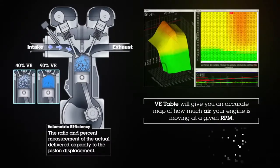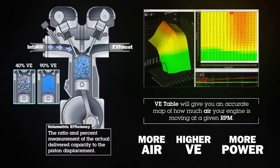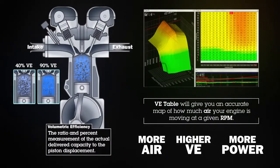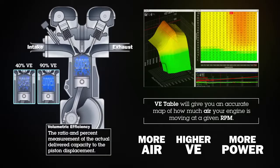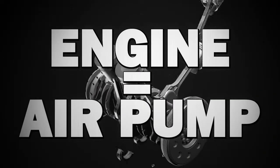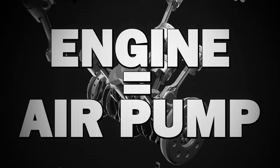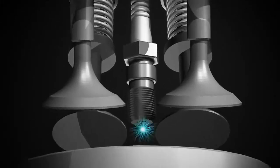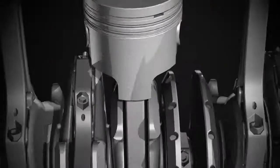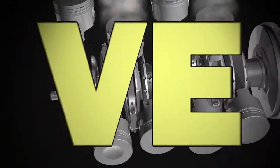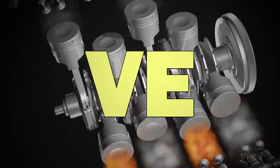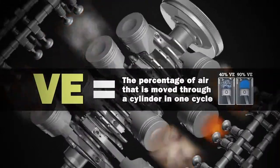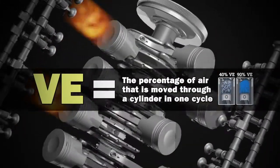VE stands for volumetric efficiency, which is essentially how well the engine is using its cylinder volume. We've all heard the saying that an engine is an air pump, and that's completely the case. What we use that pump for is to extract the chemical energy in the gasoline and turn it into horsepower. Volumetric efficiency is how well that engine does it per its given displacement.